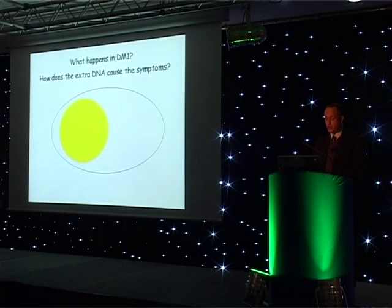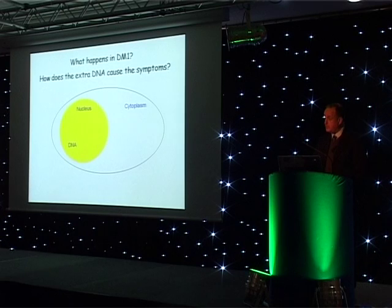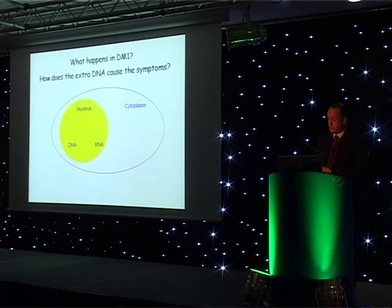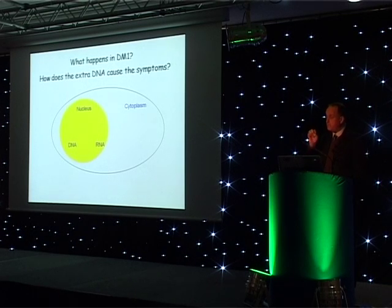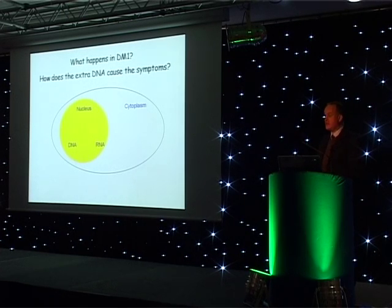So what happens in DM1? Cells have a nucleus and a cytoplasm, and the DNA is present in the nucleus. But for the mutant gene, the faulty gene, it produces an RNA which does not escape from the nucleus. When it's present in the nucleus, it aggregates into spots or foci, and those spots or foci seem to attract other things within the cell that start to create a general malfunction.